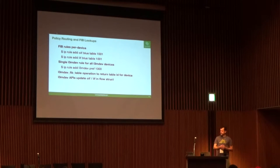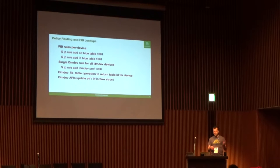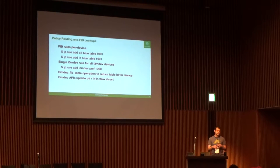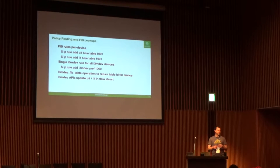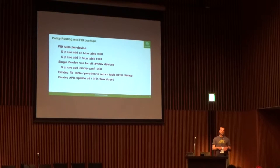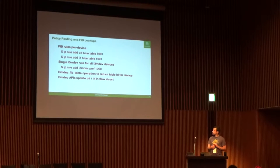From a policy routing perspective, by using an L3 master device you can set up FIB rules either per device or using an L3 MDEV rule, which addresses the scalability issue of having multiple rules per device. With the L3 MDEV rule, you've got one rule that works for everything, for all L3 MDevs. When you hit a match, it uses that FIB table operation to look up the table for that specific device and direct the lookup to that table — which has been a big help from a scalability aspect.